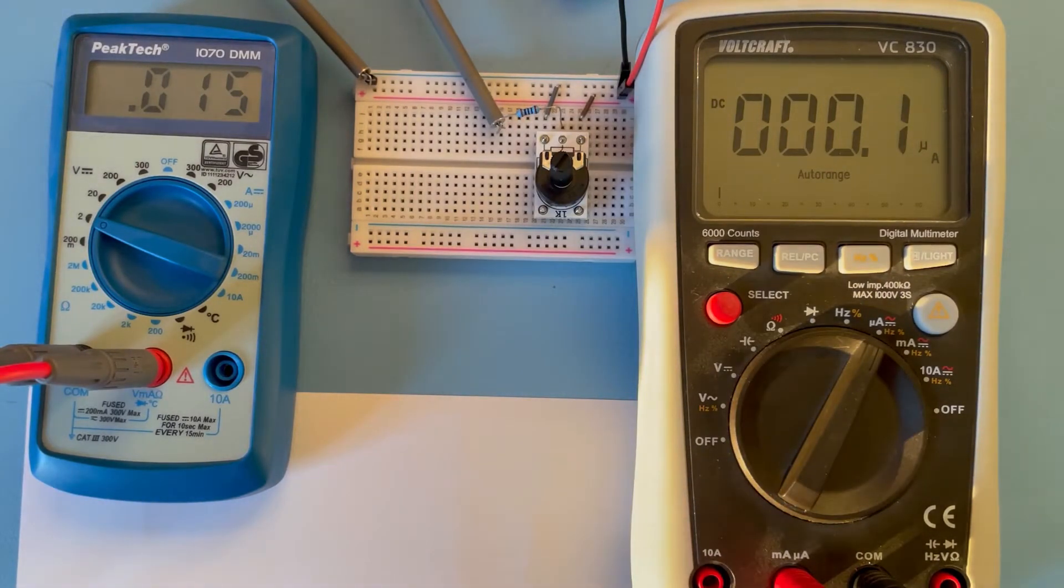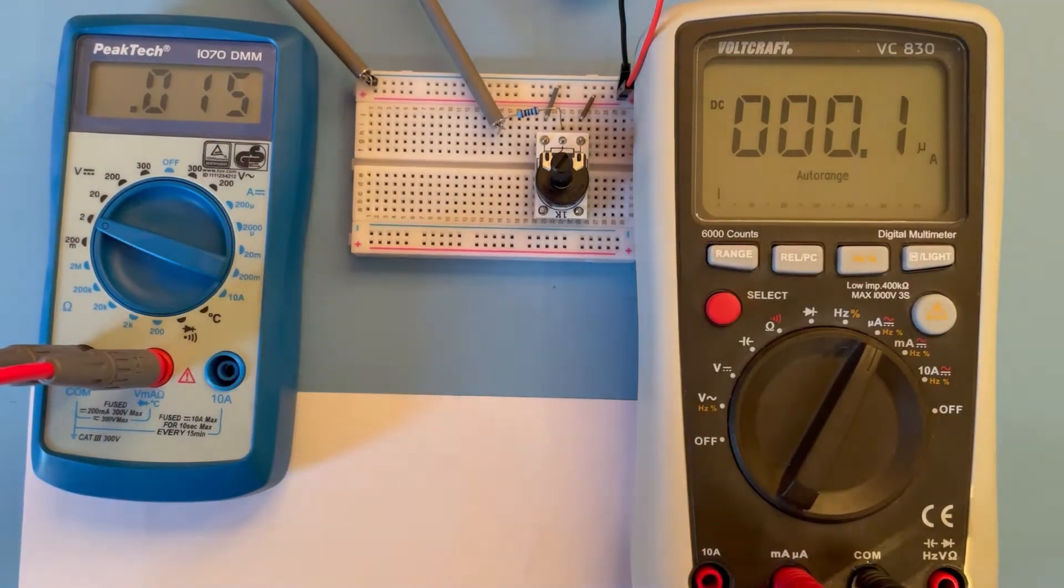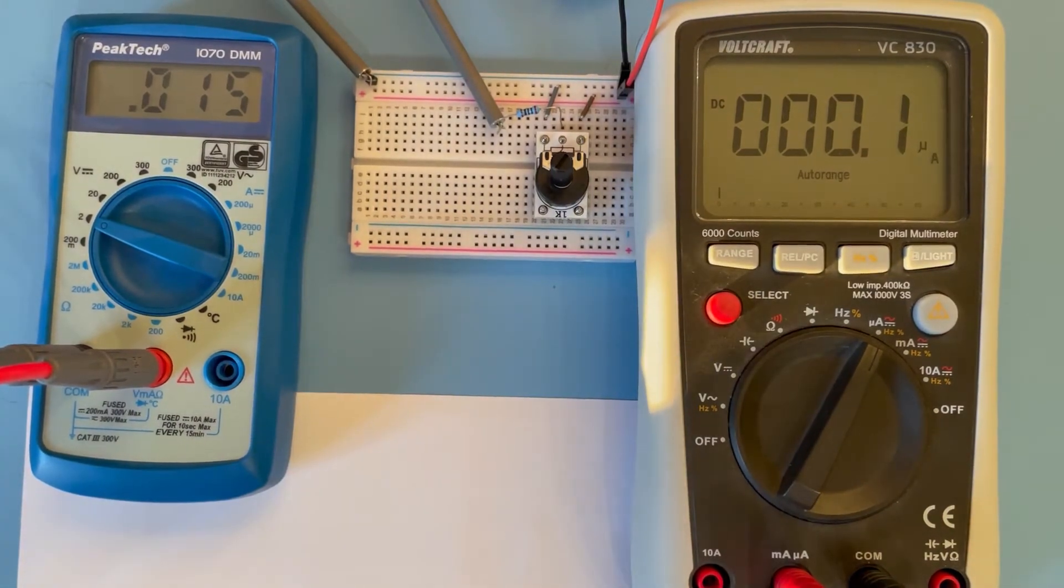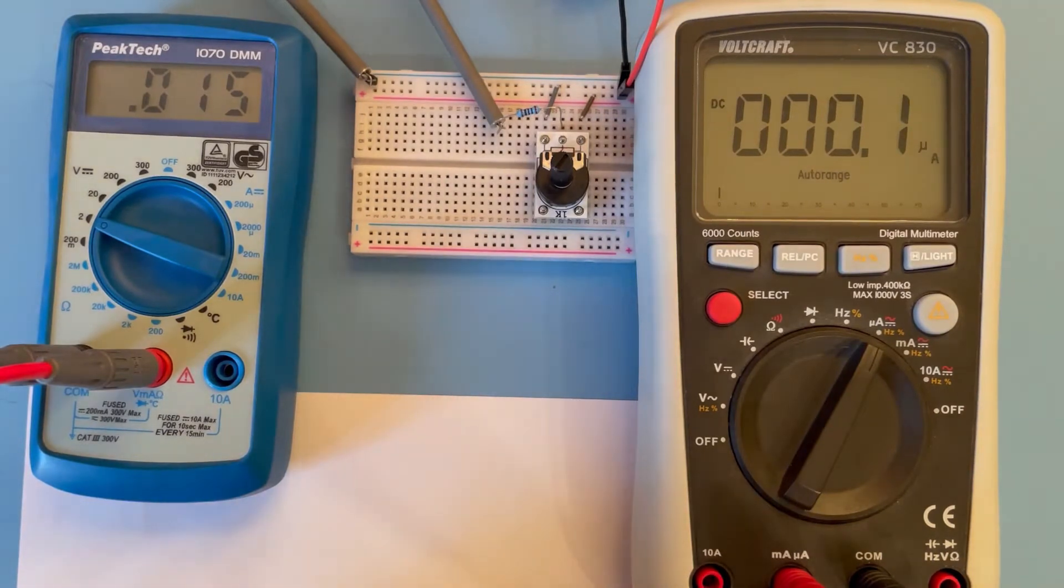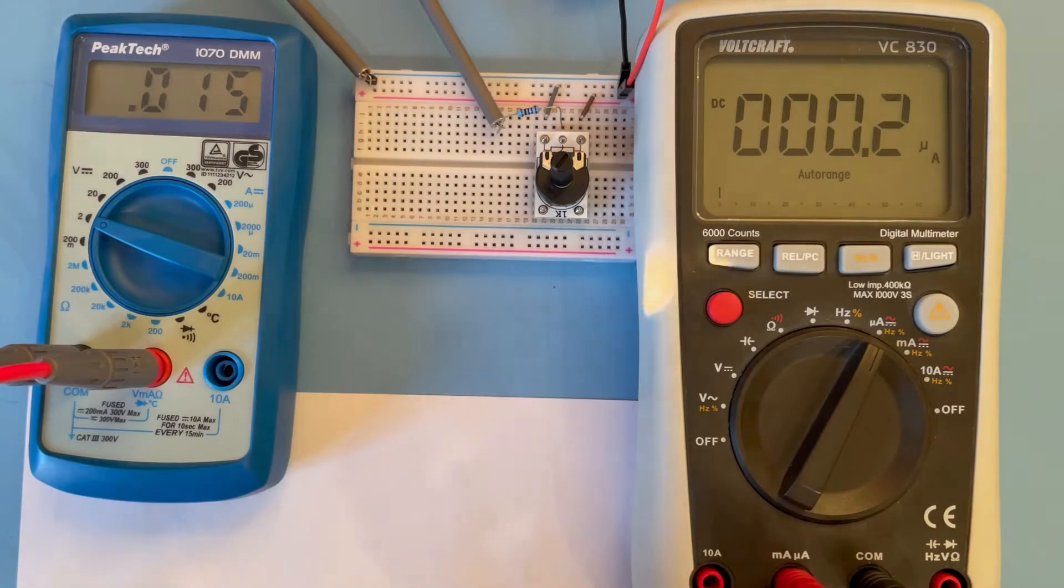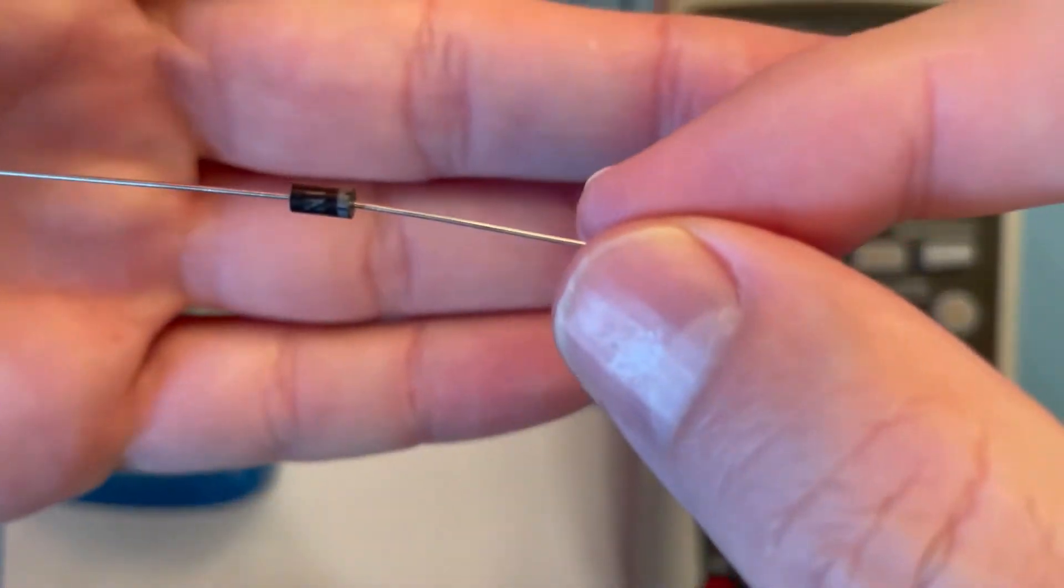Okay, welcome. Today we are going to check if the current through a diode is linear with the voltage drop, and if it's not linear, perhaps it is linear if we take the logarithm of the current.